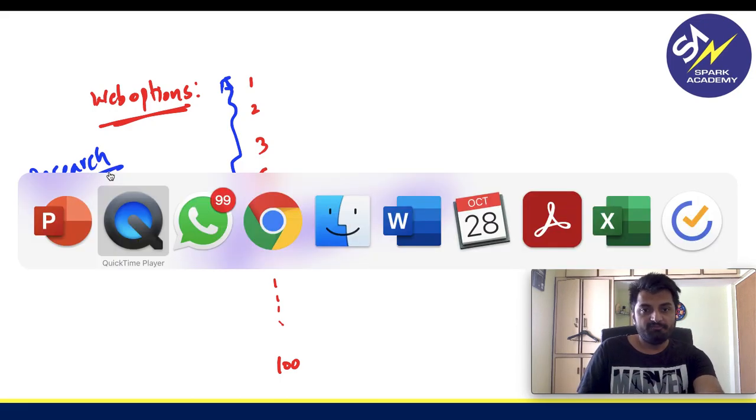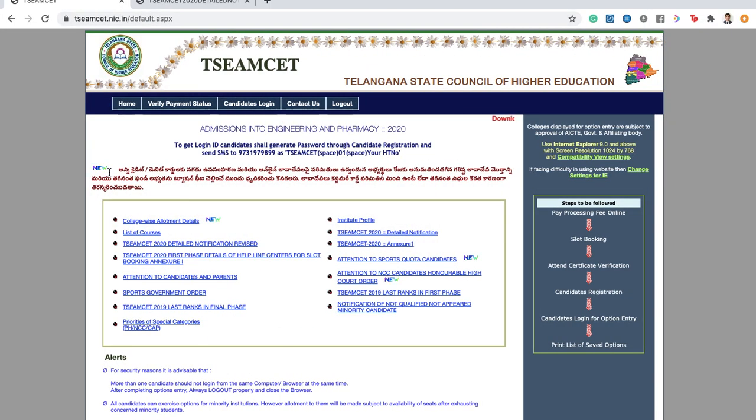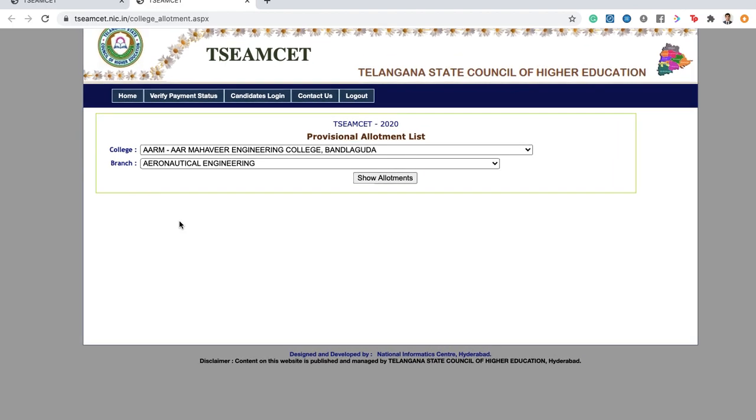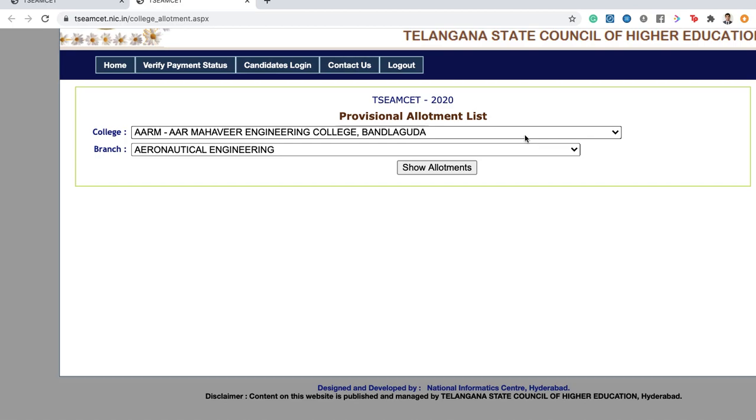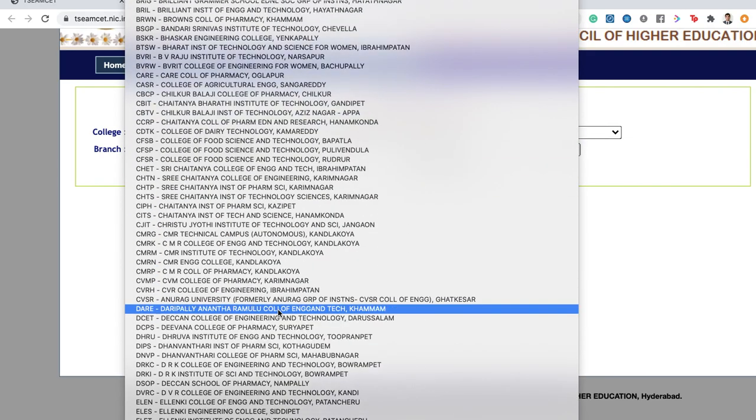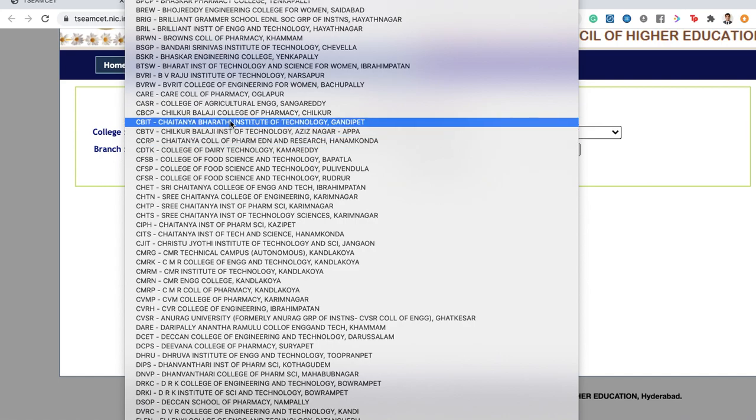Now, I will show you how to do the research properly to see where you missed the cutoff. So, for that purpose, what you need to do is, you need to visit the MSET website as you can see and you need to click on the college-wise allotment details. This will give you an important cue as to where you missed this seat. Suppose your dream college was, let us say, CBIT. So, you have to scroll down, CBIT.